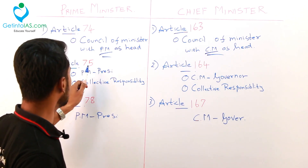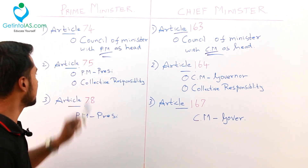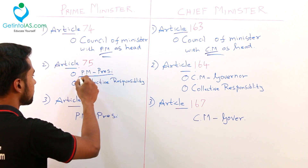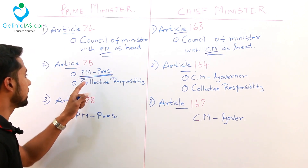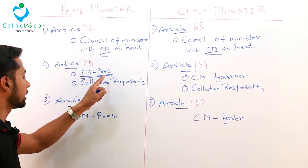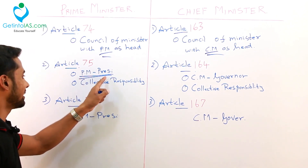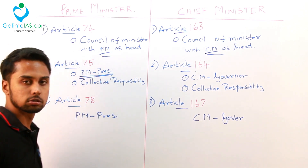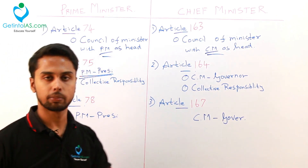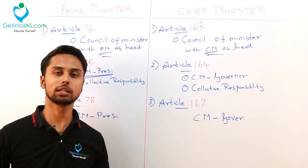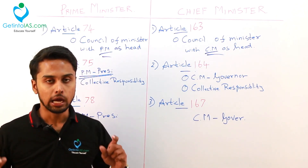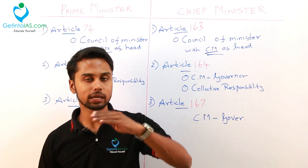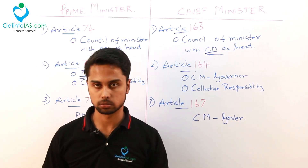Article 75 says that your prime minister will be selected by the president. It does not mean that the president can select whoever he thinks — not like that. The party which has a majority in the Lok Sabha, that party's leader is appointed as prime minister.